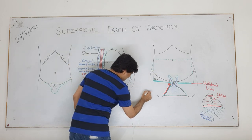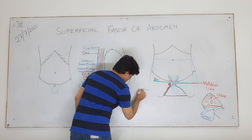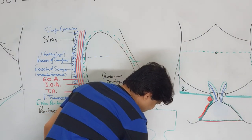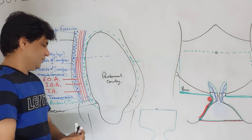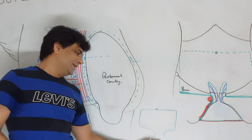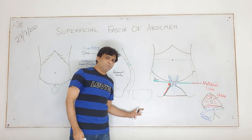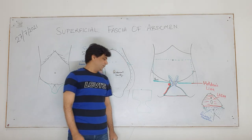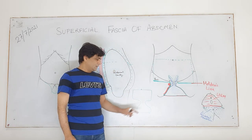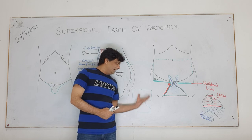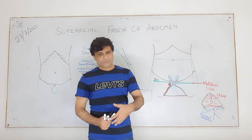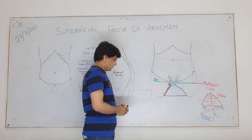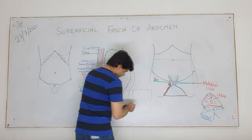This diagram shows the extent of fascia of Scarpa in the abdominal wall including the perineum. Isn't it acting as a diaper? I'll tell you its clinical significance, but first remember there are two more continuations still further.